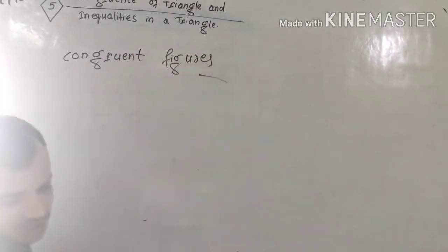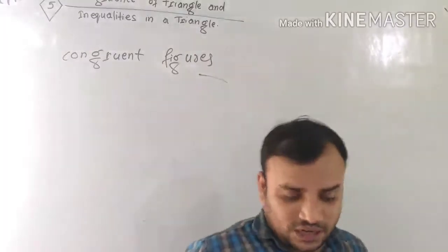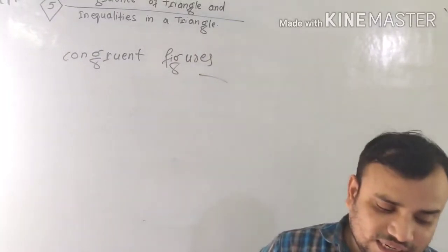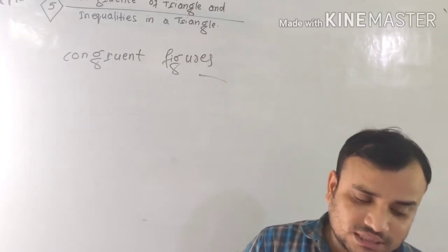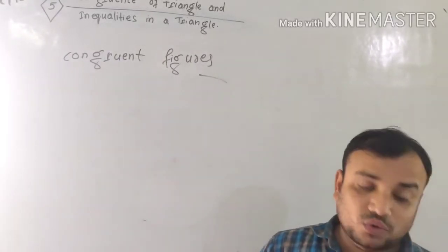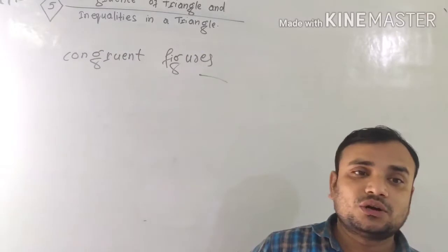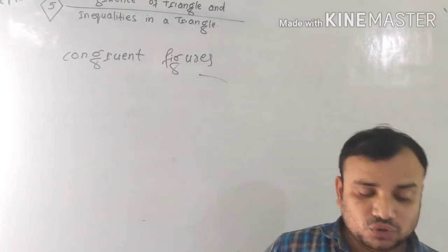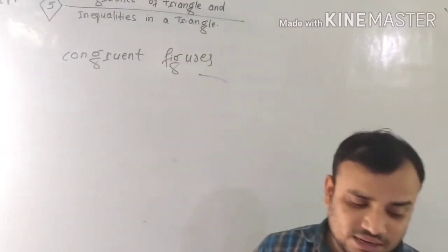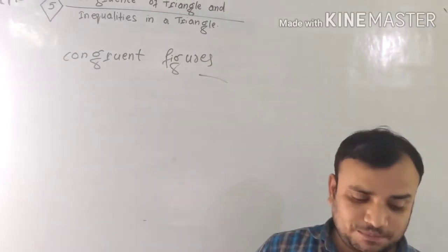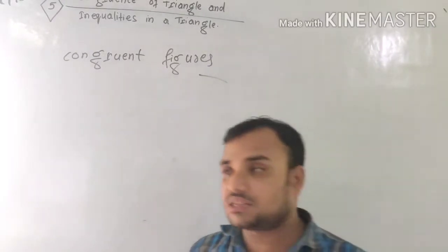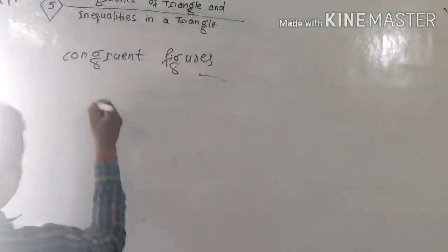Now dear students, two geometrical figures having exactly the same shape and size are known as congruent figures.